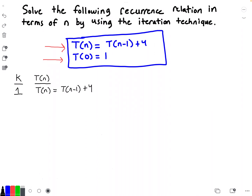Before we get to the second iteration, we need to know what T(n-1) is equal to. We just plug n-1 into the original T(n) function. So T(n-1) is equal to T((n-1)-1) plus 4, and if I simplify that I get T(n-2) plus 4.